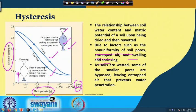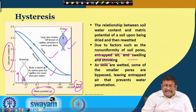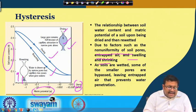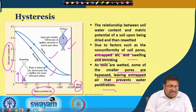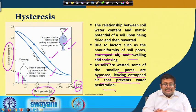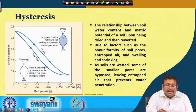When rewetting the soil, water is drawn up by the narrow pores, but the capillary rise ceases when the pore widens suddenly. As a result, at a given matric potential, the water content in a drying soil will always be higher than the water content when rewetting the soil — this property is called hysteresis. Another important reason: when soils are wetted, some of the smaller pores are bypassed, leaving entrapped air that prevents water penetration, which is another important reason for the lower water content in the rewetting curve.